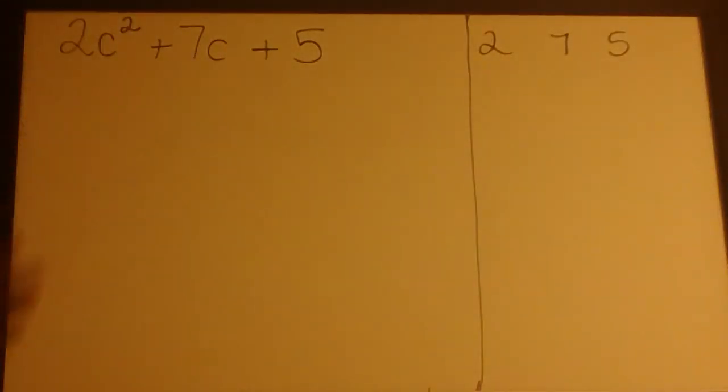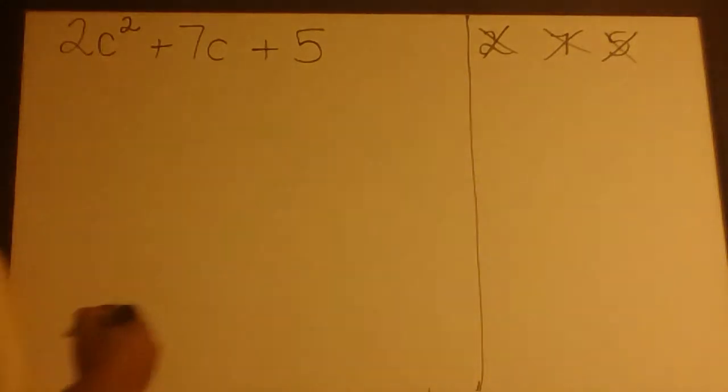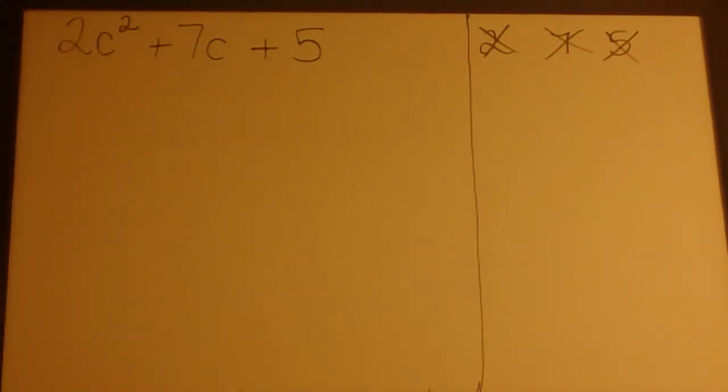Since there's not a number that will go into 2, 7, and 5, there's not a GCF. So there's no GCF from the beginning.